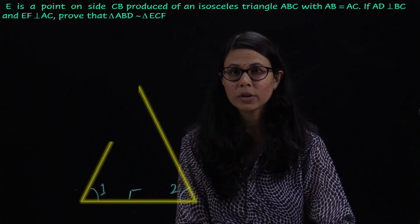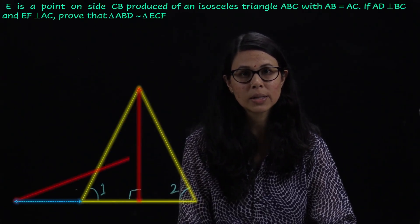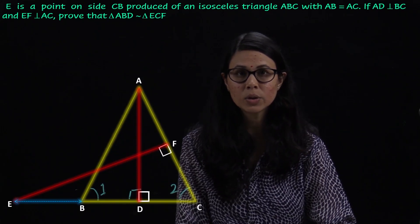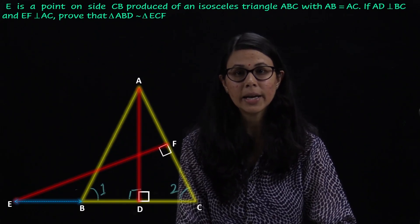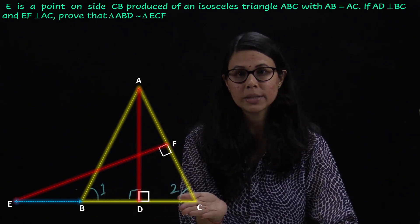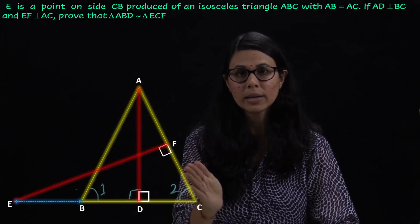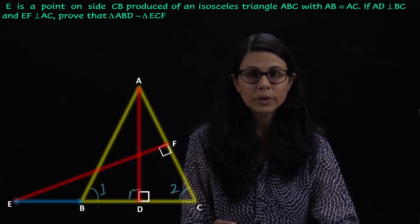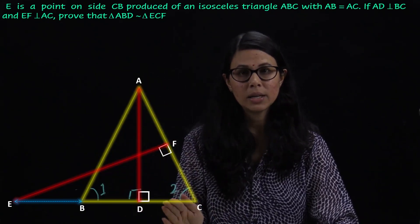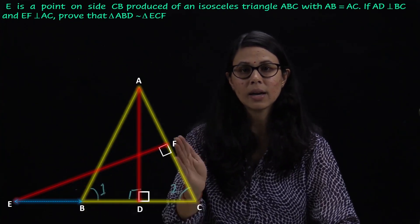In figure, E is a point on side CB produced of an isosceles triangle ABC with AB equal to AC. If AD is perpendicular on BC and EF is perpendicular on CA, then prove that triangle ABD is similar to triangle ECF.